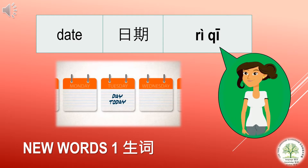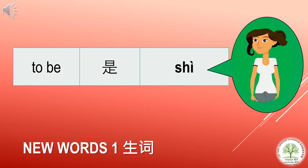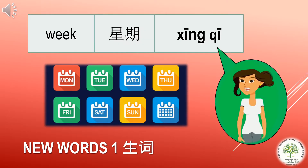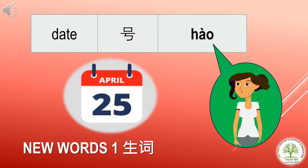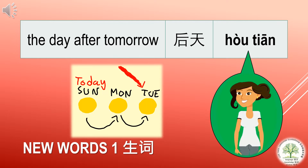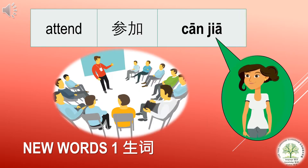Key vocabulary: date — 日期; week — 星期; month — 月; date — 日期; the day after tomorrow — 后天; attend — 参加.